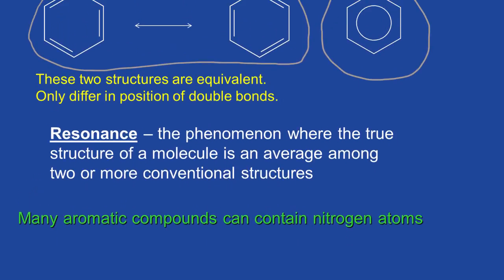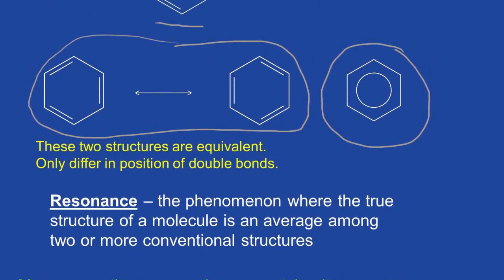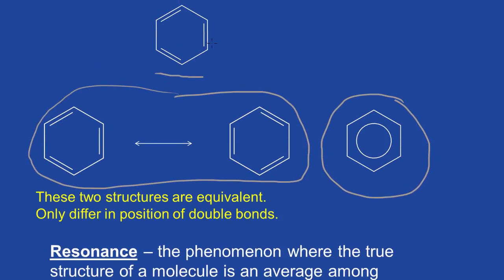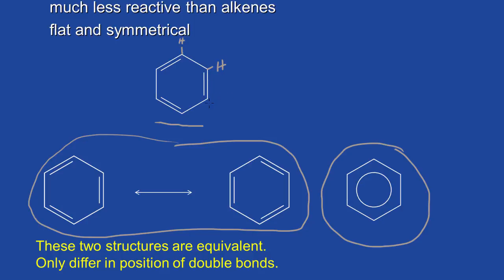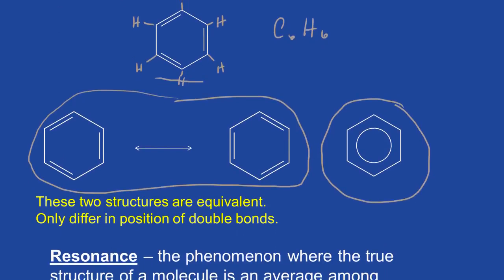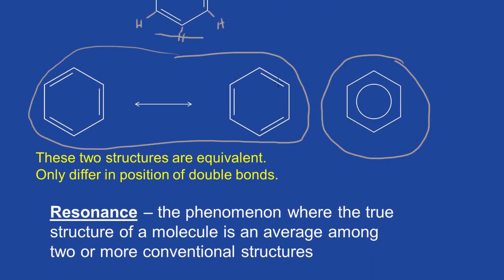A little bit later we're going to find that there are aromatic compounds that can contain a nitrogen in place of a carbon in the ring, and some contain oxygens as well — but we will talk about those as we come across them in future sections. When we draw this structure, remember we have six hydrogens — each carbon is bonded to one hydrogen. That formula is C6H6. These are not alternating single and double bonds; the six bonds are equivalent to one another due to resonance, which is electron delocalization.